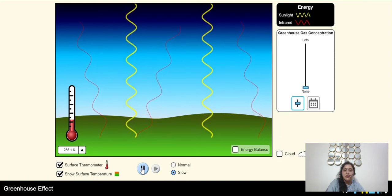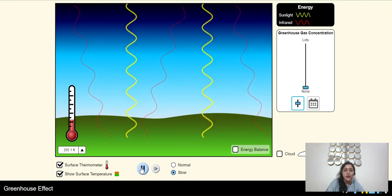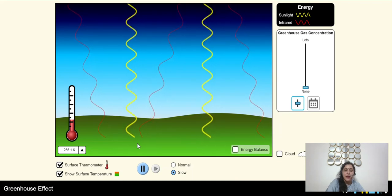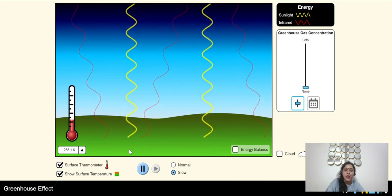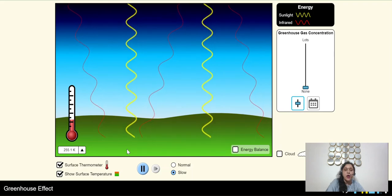These sun rays, they are reaching the surface of the earth. And infrared rays, they reflect into the atmosphere.